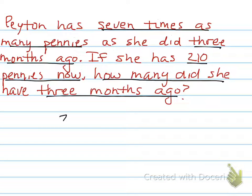how many did she have three months ago? So, right now, she is 210. She wants to find out, if she put it into seven piles, representing three months ago, finding out how many she started with. Seven times is less. You do 210 divided by seven.